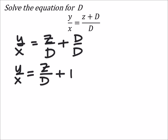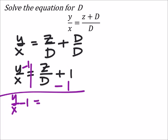So since I want the D's on their own side even if it is in the denominator, I would subtract one from both sides. So subtract one from both sides and we have Y over X minus one equals Z over D.